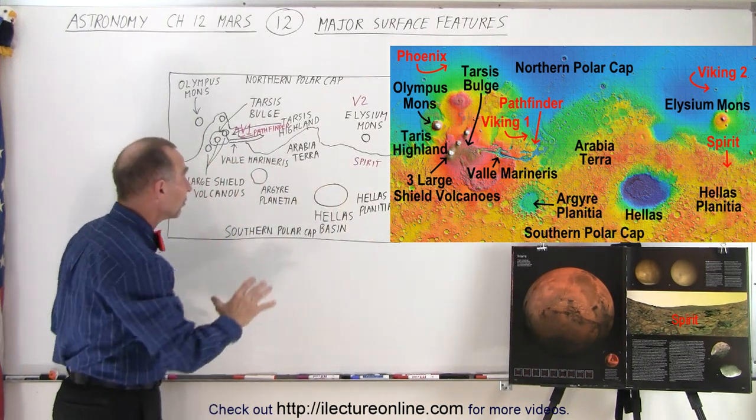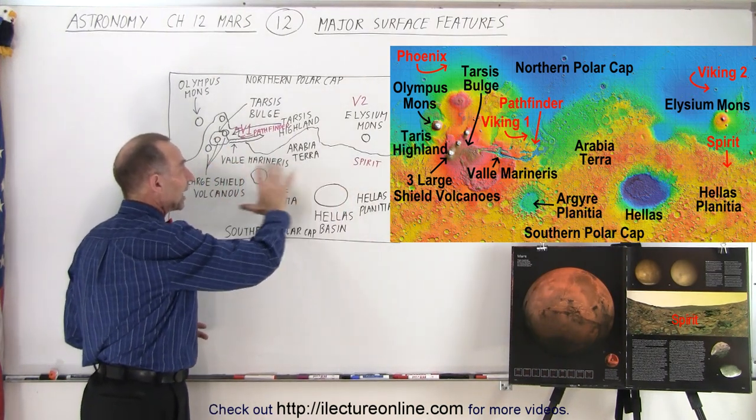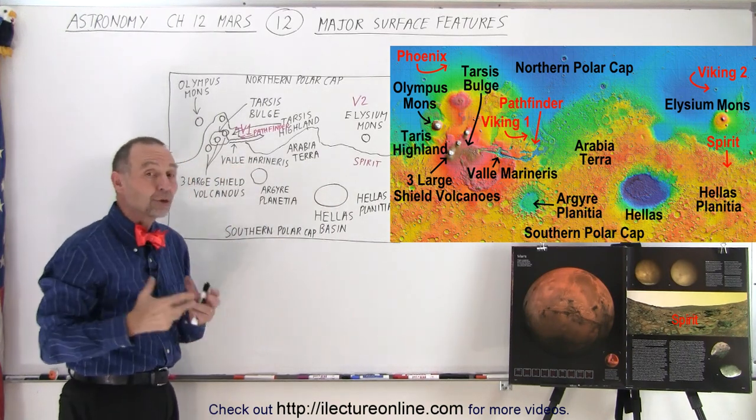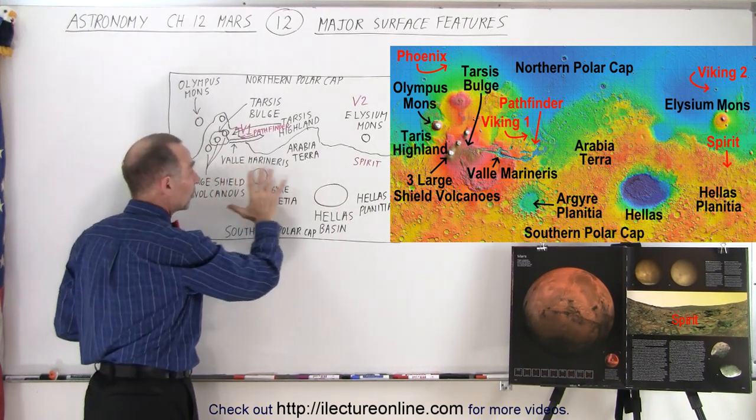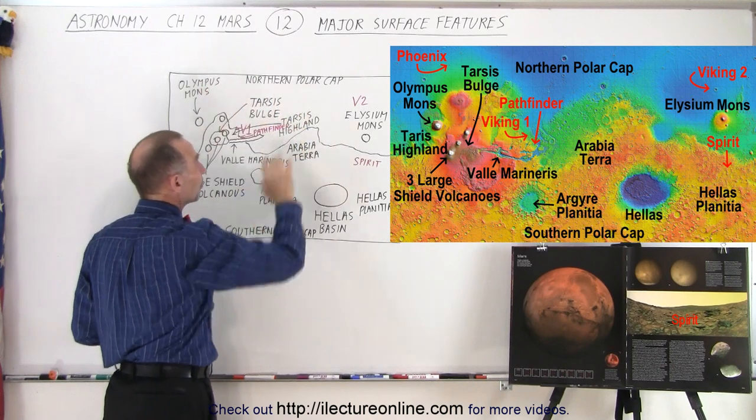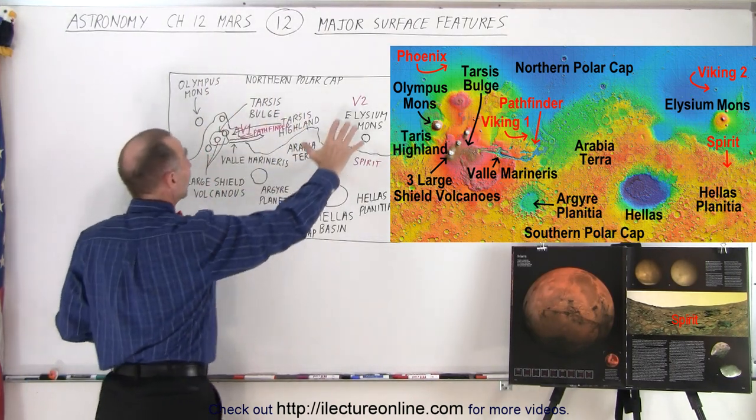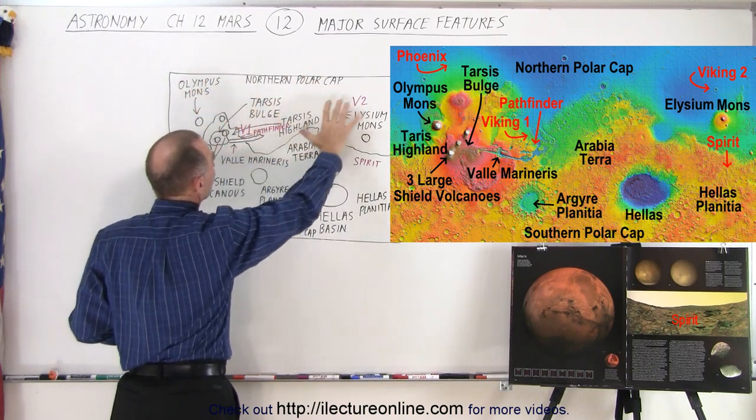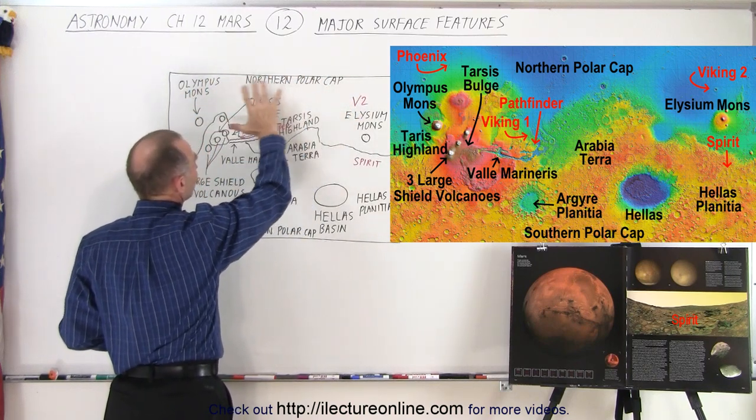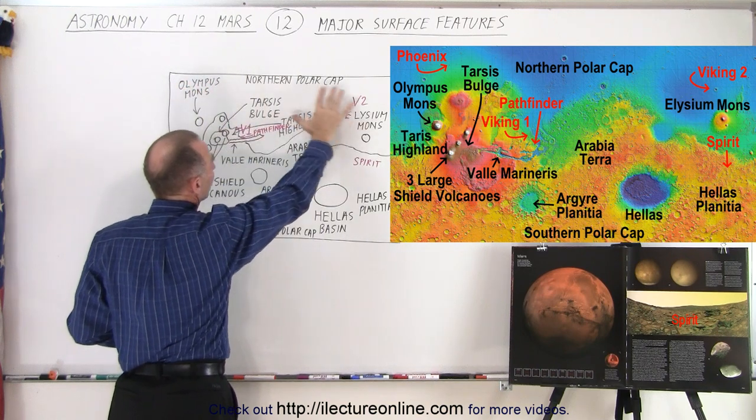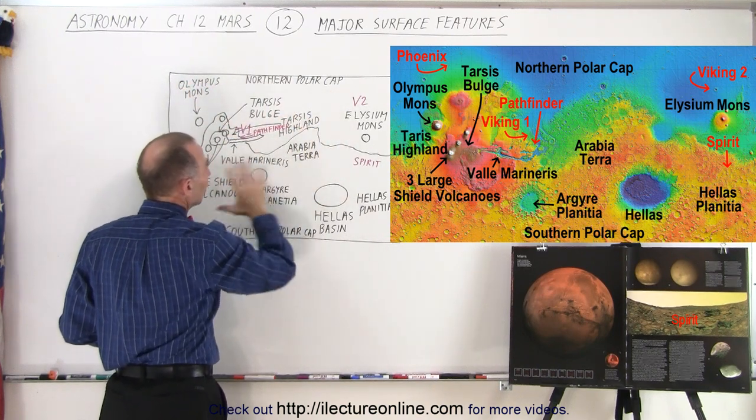Also, the bottom region tends to be much more scarred, I should say, with craters. So many more craters on this region than on this region. There are theories that perhaps Mars was hit by something very large that obliterated the northern end and then reformed, and therefore shows far fewer craters in this region than in this region.